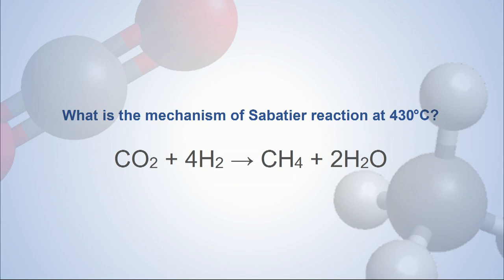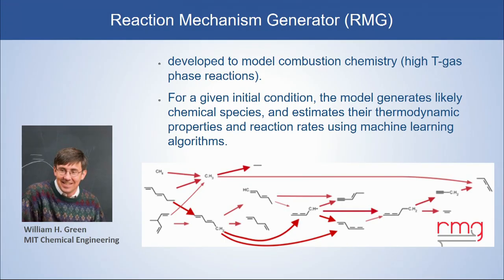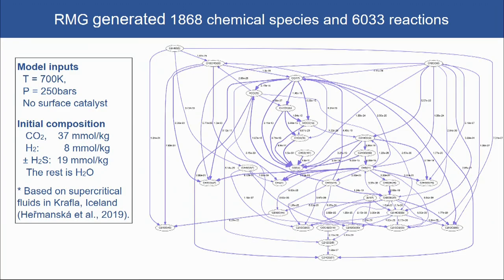The question is: what is the mechanism to make methane in this high-temperature environment? We started working with a chemical engineer at MIT who developed a fantastic software called Reaction Mechanism Generator. Originally developed to model combustion chemistry — high-temperature, gas-phase reactions — for a given initial condition it can automatically generate all chemical species and all reaction rates using a machine learning algorithm. I took the fluid composition from the Krafla geothermal well, along with temperature and pressure conditions, put them into the model, and in two to three hours you can generate a supercharged reaction network showing how all those species are related to each other.